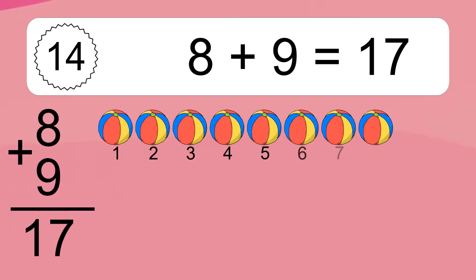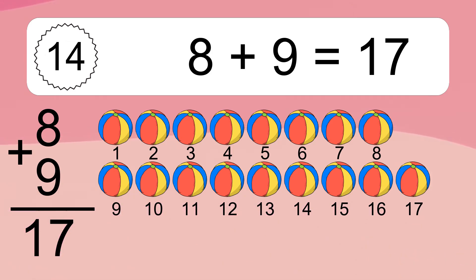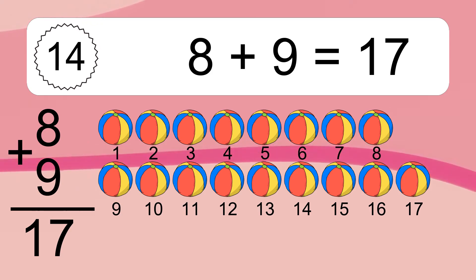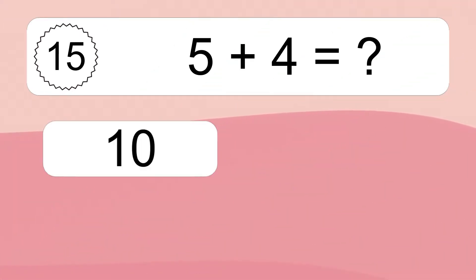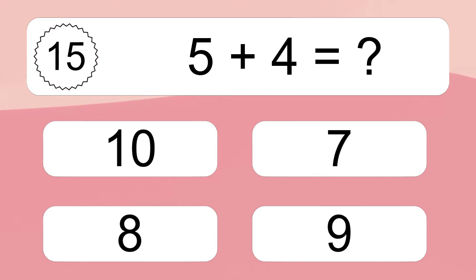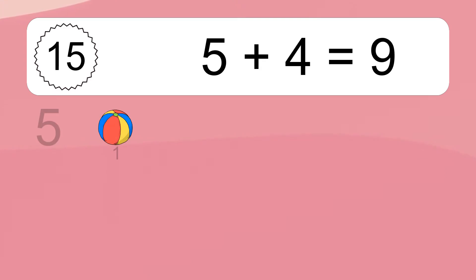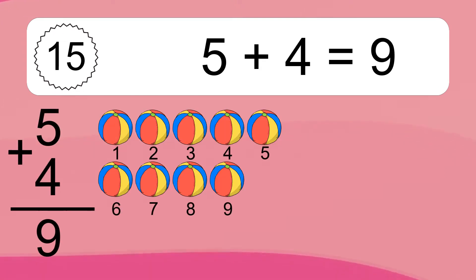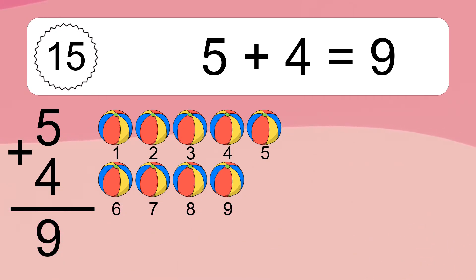8 plus 9 equals 17. Let's count it. 1, 2, 3, 4, 5, 6, 7, 8, 9, 10, 11, 12, 13, 14, 15, 16, 17. 5 plus 4 equals what? 5 plus 4 equals 9. Let's count it. 1, 2, 3, 4, 5, 6, 7, 8, 9.